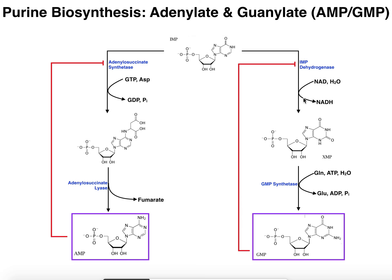The reverse is also true. If I have lots of GMP and don't need to make any more G's, GMP can feed back and allosterically inhibit IMP dehydrogenase. That makes sense because if you already have too many G's, you don't need to make any more. So GMP will feed back and inhibit its own synthesis, and that will give IMP a chance to be diverted towards the left to make more AMP. It's all about balance.